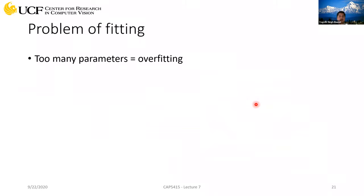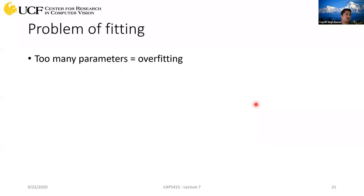Another issue is overfitting and underfitting. Based on how many training samples and how many parameters you have, if you have too many parameters the network will overfit the training data — it will try to learn each and every sample individually rather than the general pattern in the data.